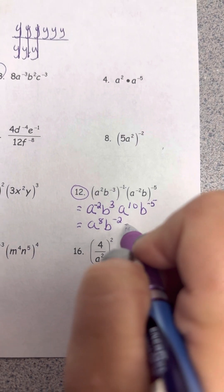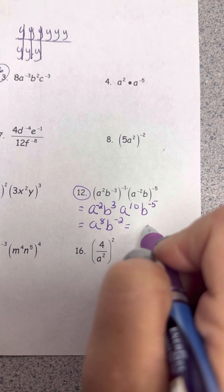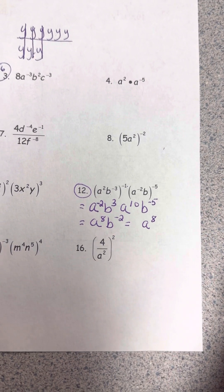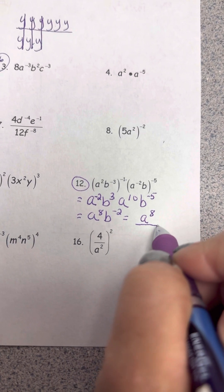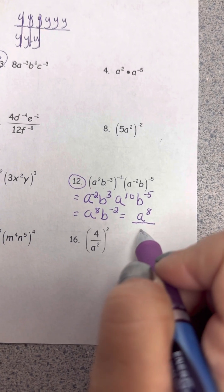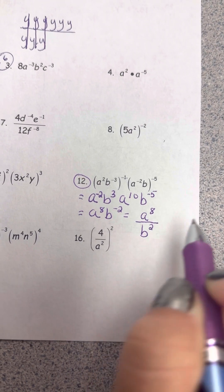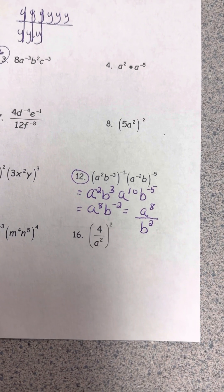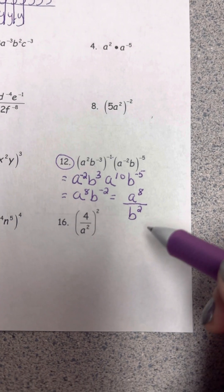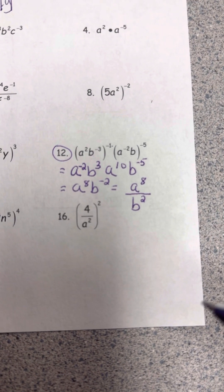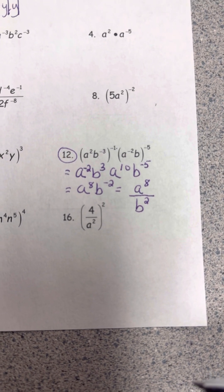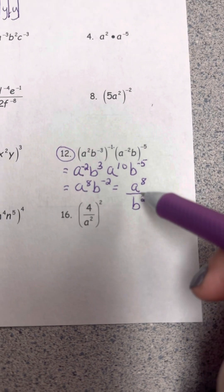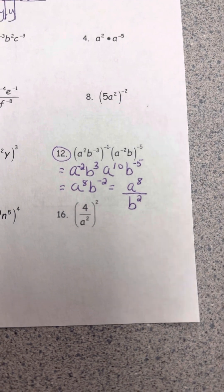Now I need to get rid of the remaining negative exponent. I'll leave a to the eighth in the numerator. The b to the negative 2 is currently in the numerator position, so I move it to the denominator to make that negative go away. I know I'm done: no whole numbers to simplify, no parentheses, no negative exponents, and no repeated bases.